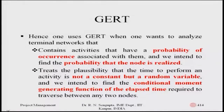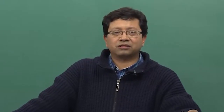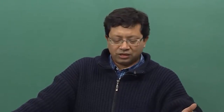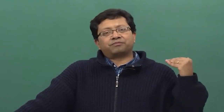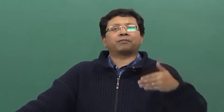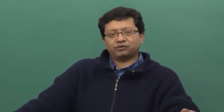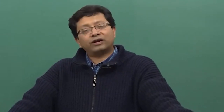One can use GERT when one wants to analyze terminal networks containing activities that have a probability of occurrence associated with them, and we intend to find the probability that the node is realized. Our analysis focuses on the precedence diagram considering the nodes as activities. We will find the probability of occurrence of a node, considering that the precedence relationships are met depending on the stated probability.